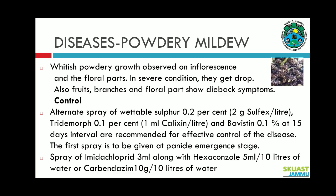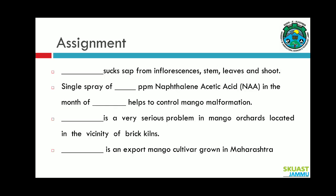Powdery mildew: a whitish powdery growth is observed on the inflorescence and floral parts. In severe conditions they get dropped, and the fruits, branches, and floral parts show dieback symptoms. For control, alternate sprays of wettable sulfur 0.2 percent (2 gram Sulfex per liter) and Bavistin 0.1 percent at 15-day intervals are recommended. The first spray is to be given at panicle emergence stage. A spray of imidacloprid 3 ml along with hexaconazole 5 ml in 10 liters of water, or carbendazim 10 gram per 10 liters of water, will also control powdery mildew.